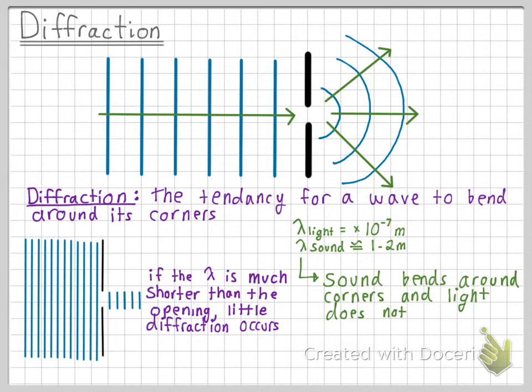Light, on the other hand, is a very small wavelength, which is approximately 10 to the negative seven meters. Since light's wavelengths are small compared to the opening around the corner, there is no diffraction. If there was diffraction, we would actually be able to see those people who were talking around the corner, which we know is not possible.